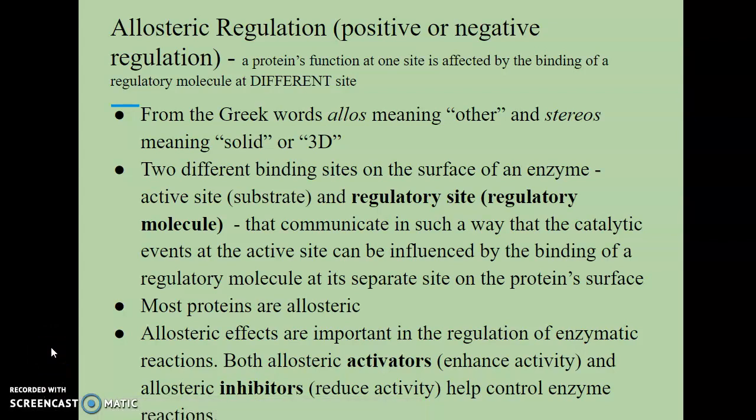We talked about feedback inhibition and now we move on to allosteric regulation, which can be either positive or negative regulation. In allosteric regulation, a protein's function — specifically an enzyme's function — at one site is affected by the binding of a regulatory molecule at a different site. Allosteric comes from the Greek word allos meaning 'other' and stereos meaning 'solid' or '3D,' so in other words, another site. Proteins have two different binding sites: an active site that binds the substrate, and a regulatory site that binds the regulatory molecule. Both sites communicate so that catalytic activity at the active site can be influenced by the binding of a regulatory molecule at the separate site.